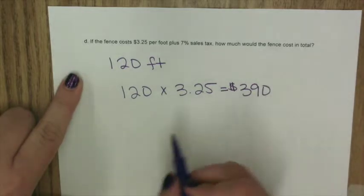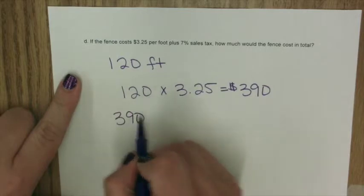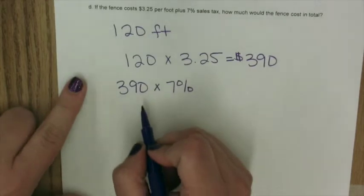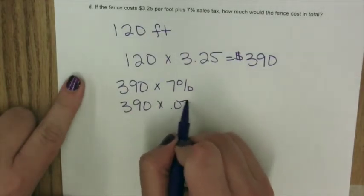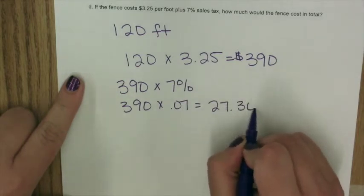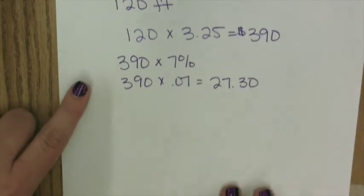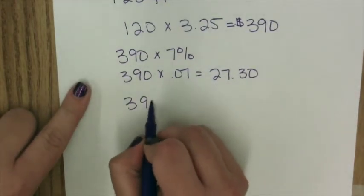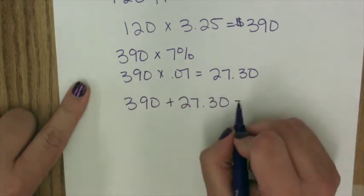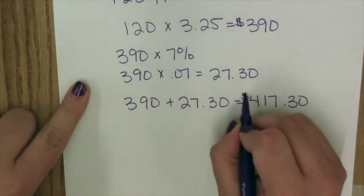Now we also have to add in sales tax. So I'm going to take my 390 and we're going to find what 7% of that is. So 390 times .07. When I multiply, I find that is $27.30. So now we're going to add those two together, the amount plus the sales tax. And we get a final cost of $417.30.